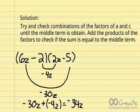Step 2. Try and check combinations of the factors of a and c until the middle term is obtained. Add the products of the factors to check if the sum is equal to the middle term.